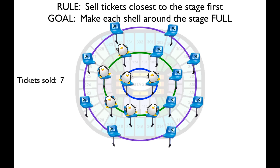What if we sell seven tickets? So notice the rule. We're selling the tickets closest to the stage first. But you notice now that we have three empty seats in that second shell. So this is nitrogen. This explains why nitrogen would want to form bonds to try and fill those empty seats. What if we sell ten tickets though? Now you notice that the first two shells are full. This is a very stable configuration, and this is actually the noble gas, neon.